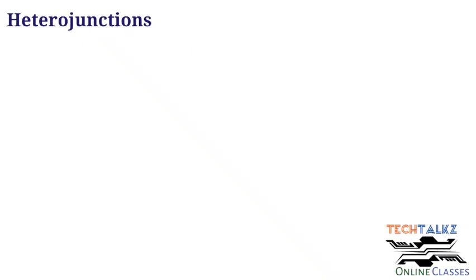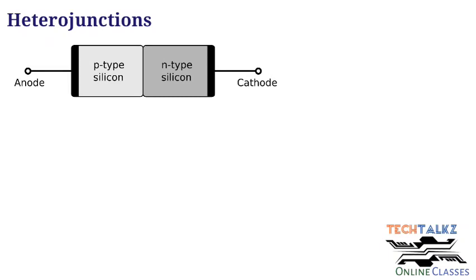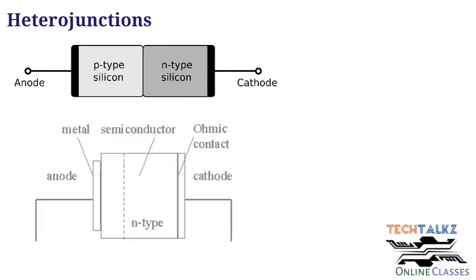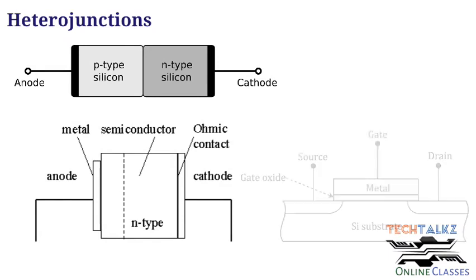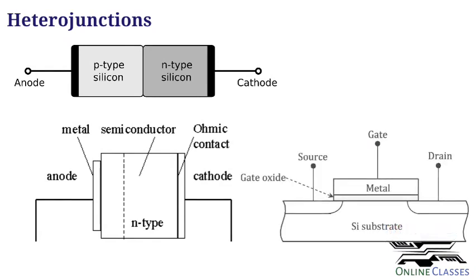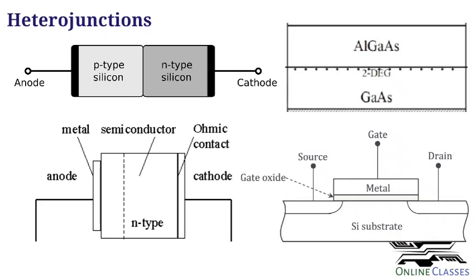If we take different semiconductor devices, there will be different kinds of junctions or interfaces like PN homo junctions, i.e. P-type silicon and N-type silicon homo junctions. Then metal semiconductor junctions, metal oxide semiconductor junctions, semiconductor heterojunctions, etc.